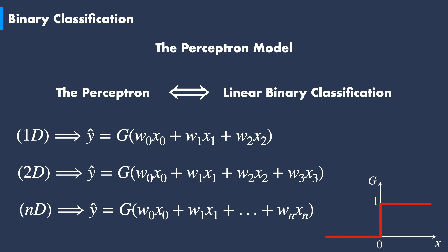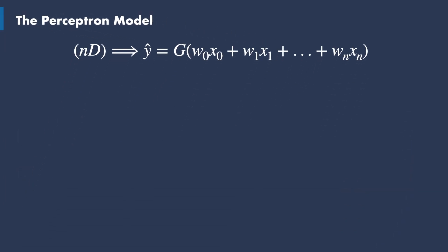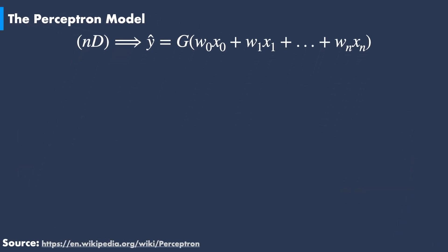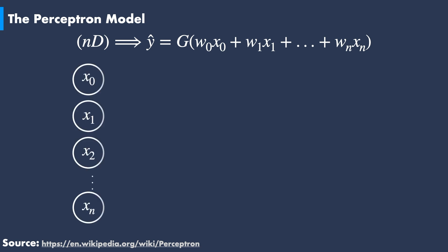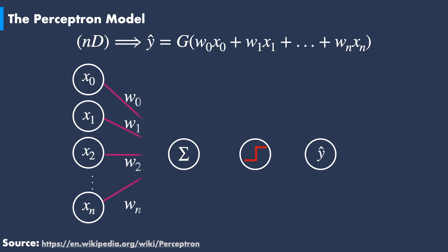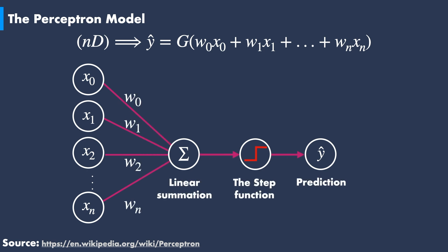Historically, the perceptron was one of the earliest artificial neural networks built for the purpose of conducting research in the field of artificial intelligence. Graphically, the perceptron can be represented as a basic linear combination of the weighted input features that go through a step activation function. The y-hat formula then outputs values that are either 0 or 1.